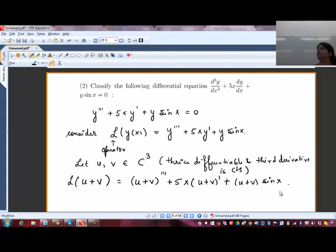I am just using the definition of L. Whenever you input any function in L, it will take three derivatives, multiply 5x with y prime and y sin x. If I input sum of two functions in this L, it will take the derivative of that sum, the third derivative of that sum, 5x times the first derivative of that sum, and the sum times sin x. Exactly the same definition, just inputting u + v instead of y.